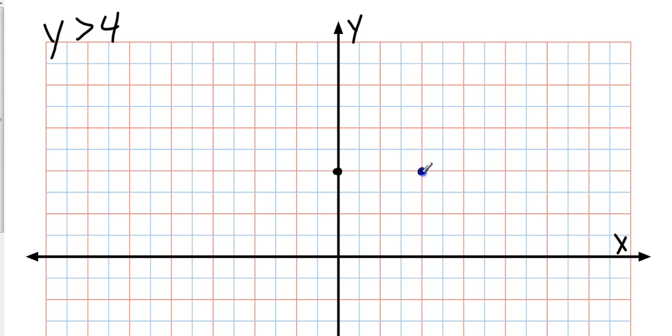Remember when we graph these, it means anywhere you go, y is 4. So if I go over here, y is 4. If I go over here, y is 4. If I go here, y is 4. And you get the pattern. Anywhere I go, y is 4. So when I have y is greater than or less than something, it's going to be a horizontal line.